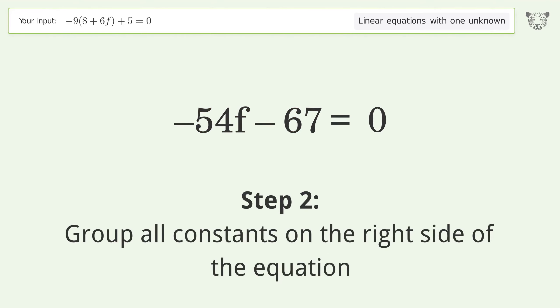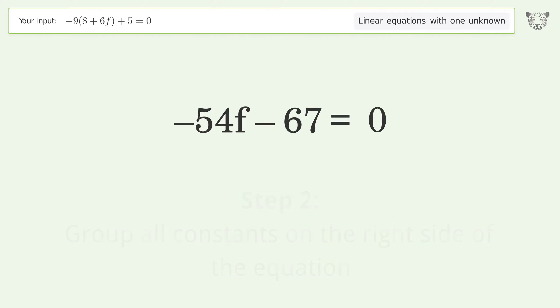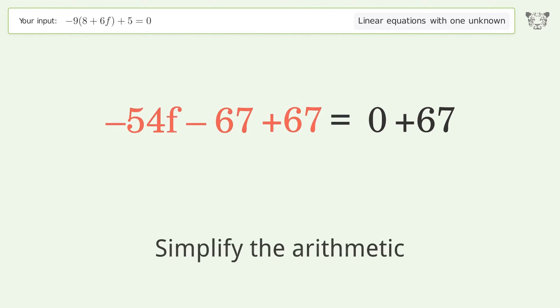Group all constants on the right side of the equation. Add 67 to both sides. Simplify the arithmetic.